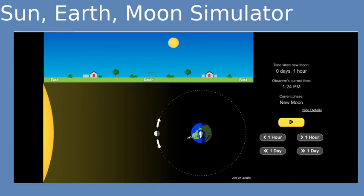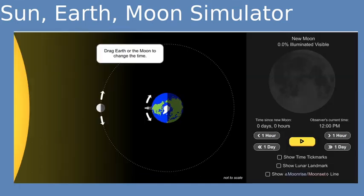Now from the same group we have a separate one which is very similar here. Again, the sun, the moon, and the earth, and your time controls, but now it also shows us the phase of the moon which is visible to someone on earth.